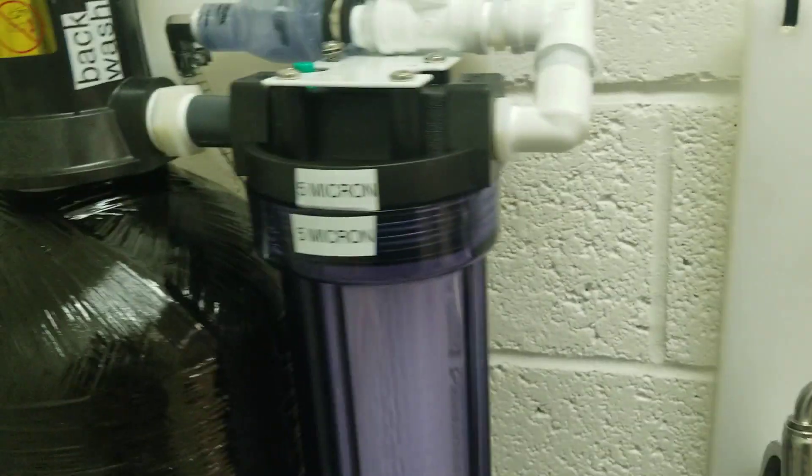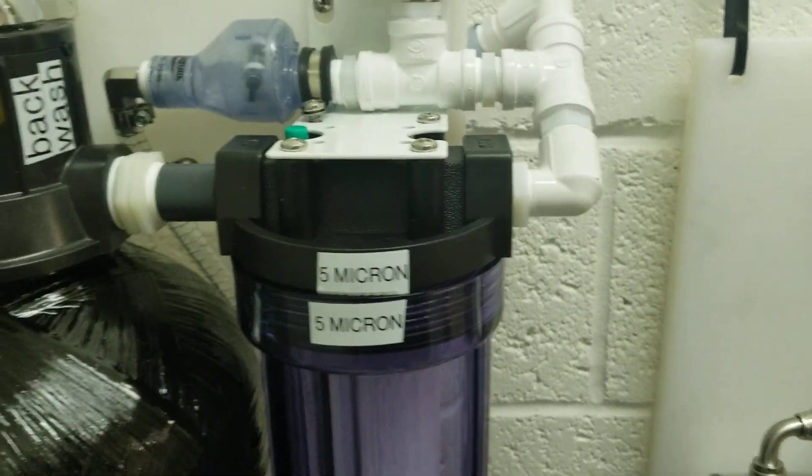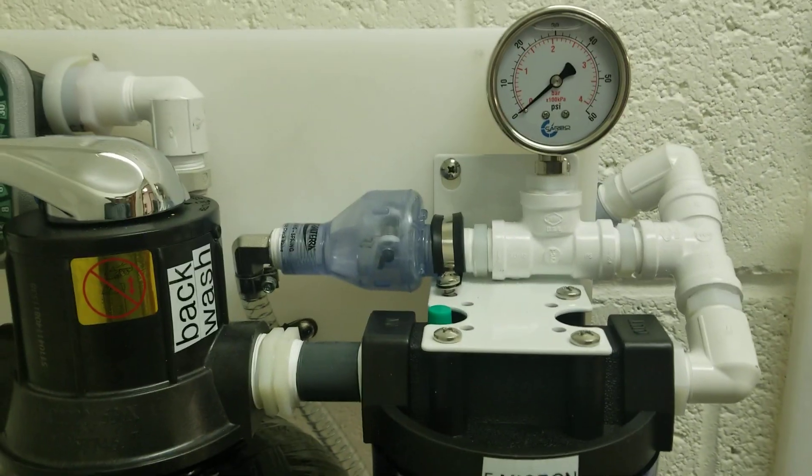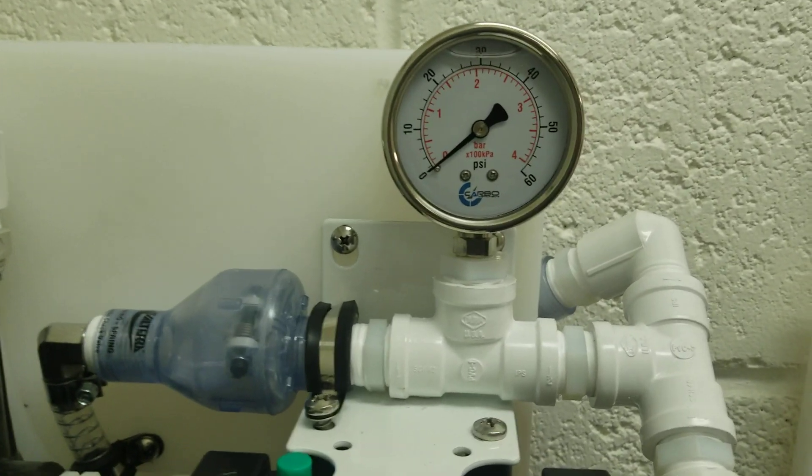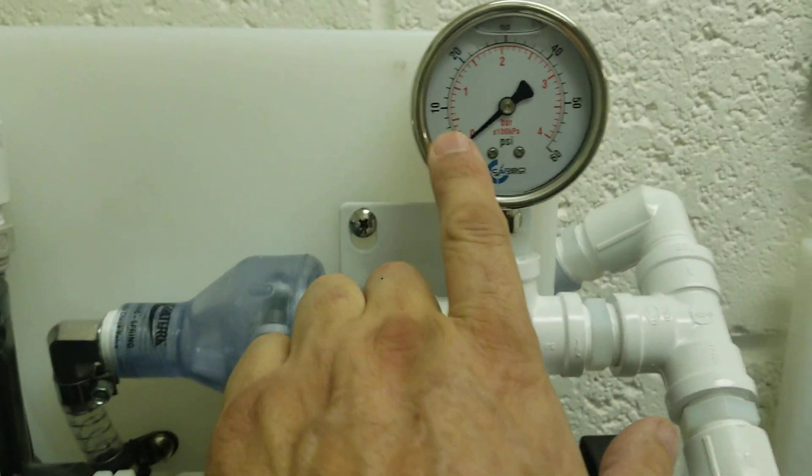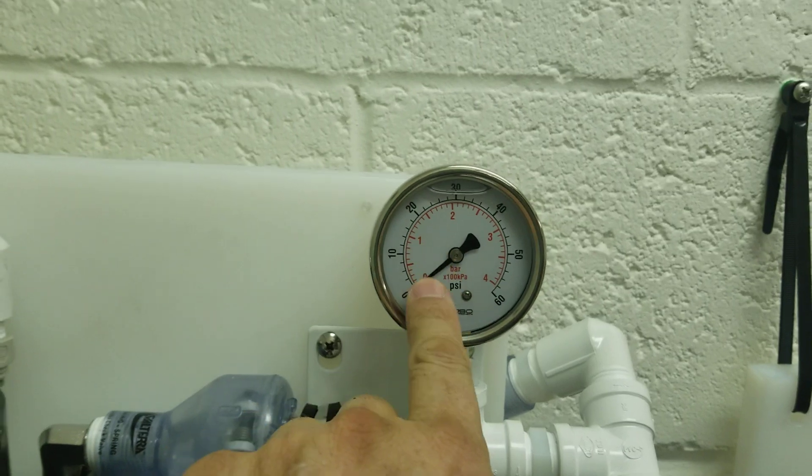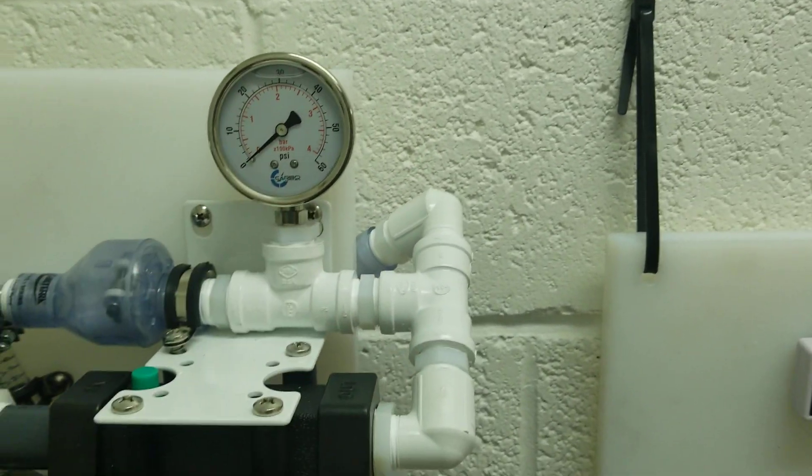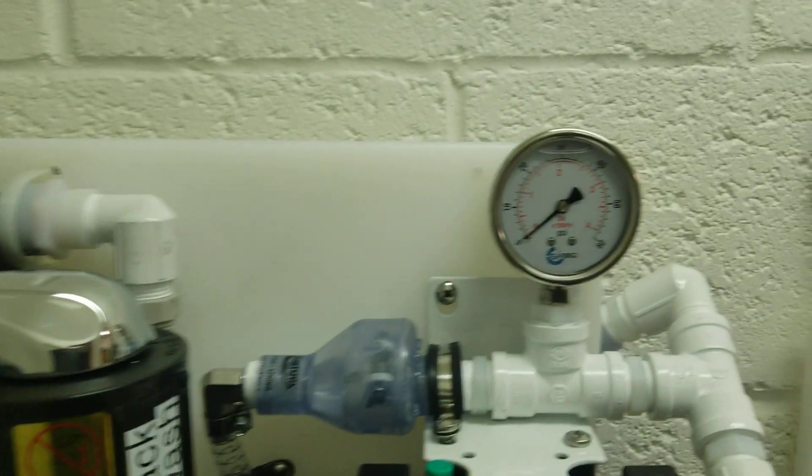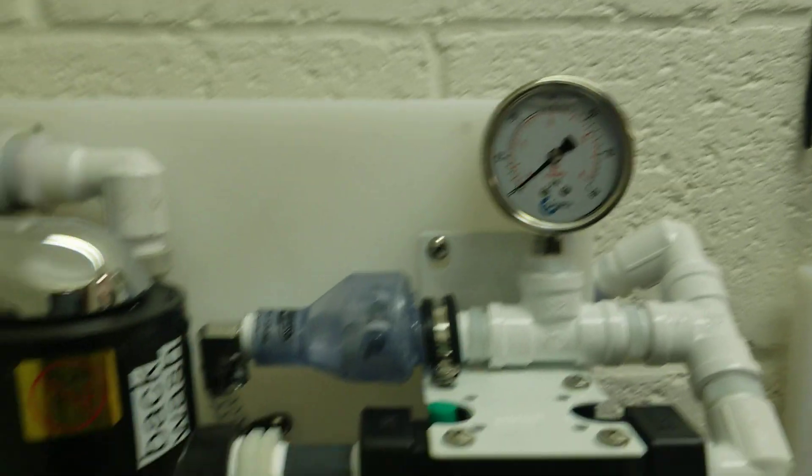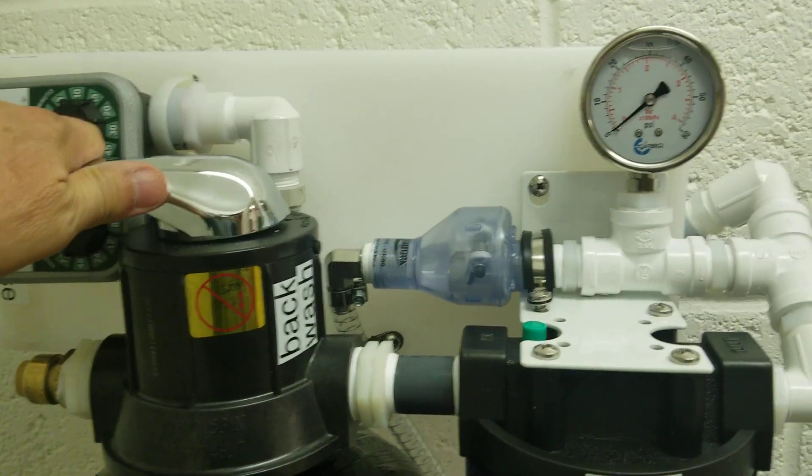And the second filter is for backup, just in case. Also here we have the pressure gauge that tells us whether the filters are flowing or they're plugged up. If you notice a pressure drop, then it's time to backwash the sand filter.